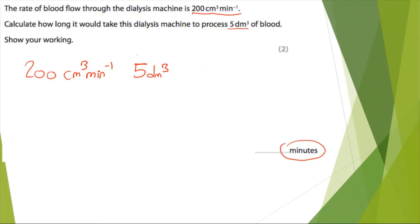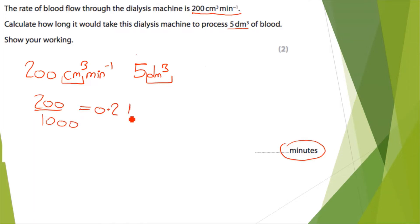What I realise now is that my volume is in different units — I have centimetres cubed and I have decimetres cubed. So I need to convert either the centimetres cubed to decimetres cubed or decimetres cubed to centimetres cubed. I'm going to convert the centimetres cubed to decimetres cubed, so I'll do 200 divided by 1000 and I get 0.2 decimetres cubed per minute.